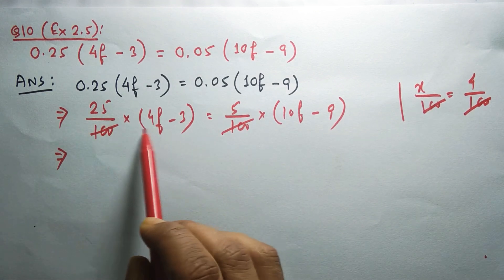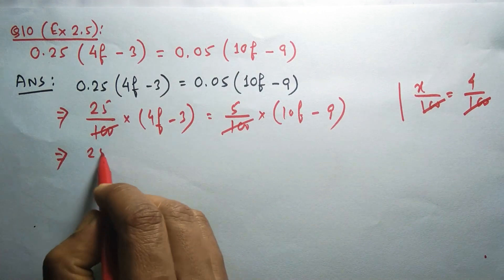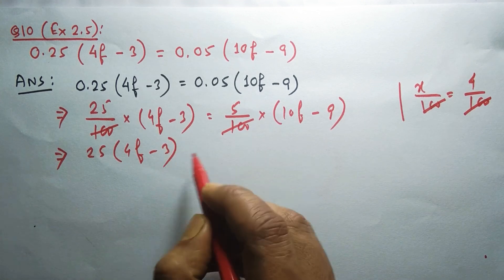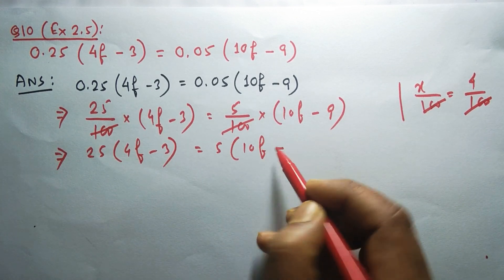After cancelling the 100, we have 25 into 4f minus 3 equals 5 into 10f minus 9. After converting this number into fractional form, there's no decimal now.